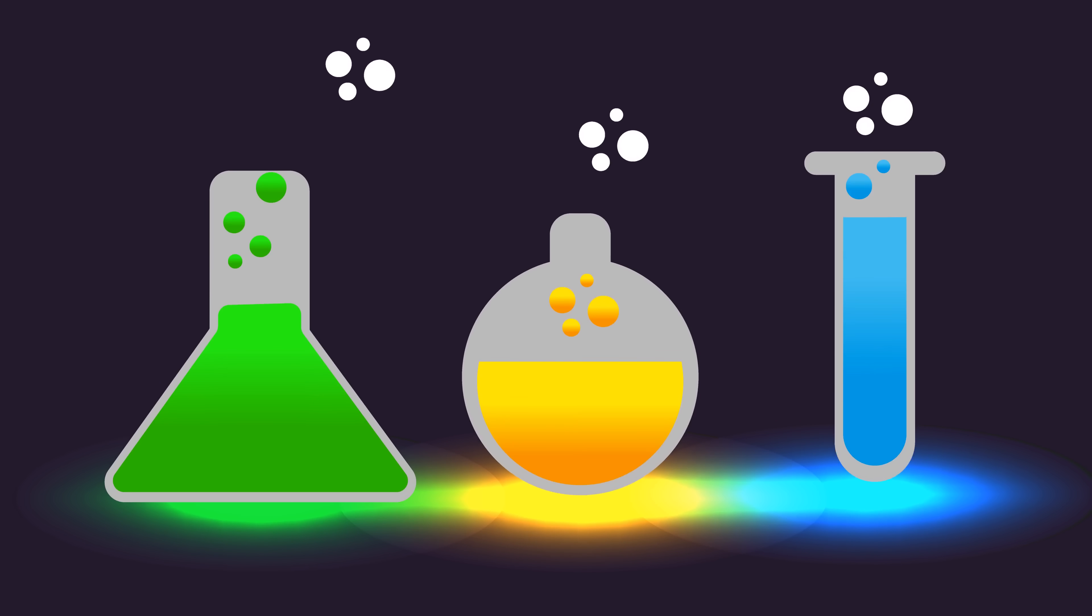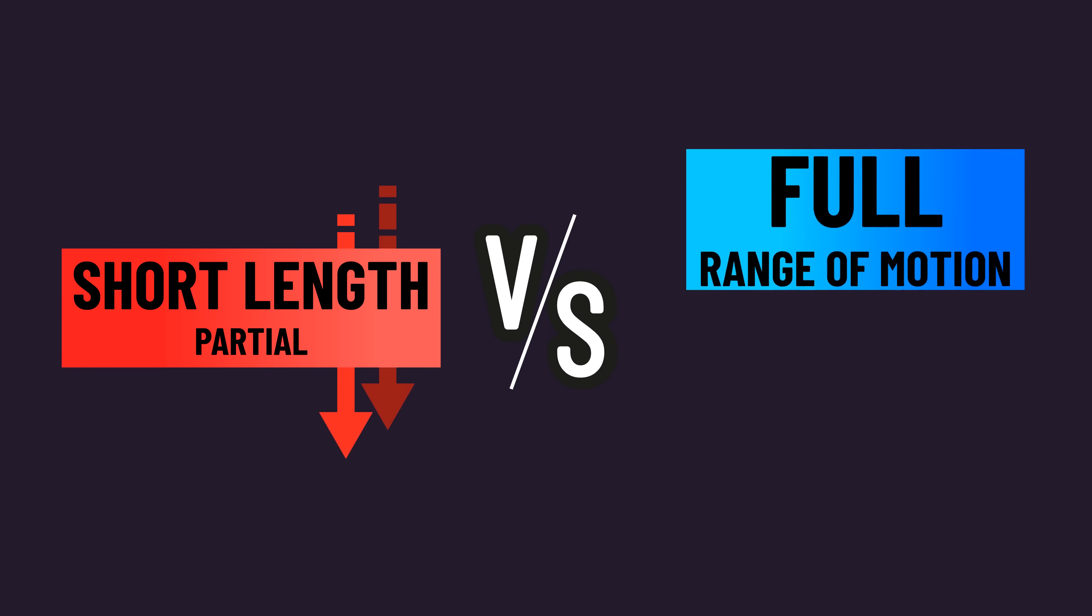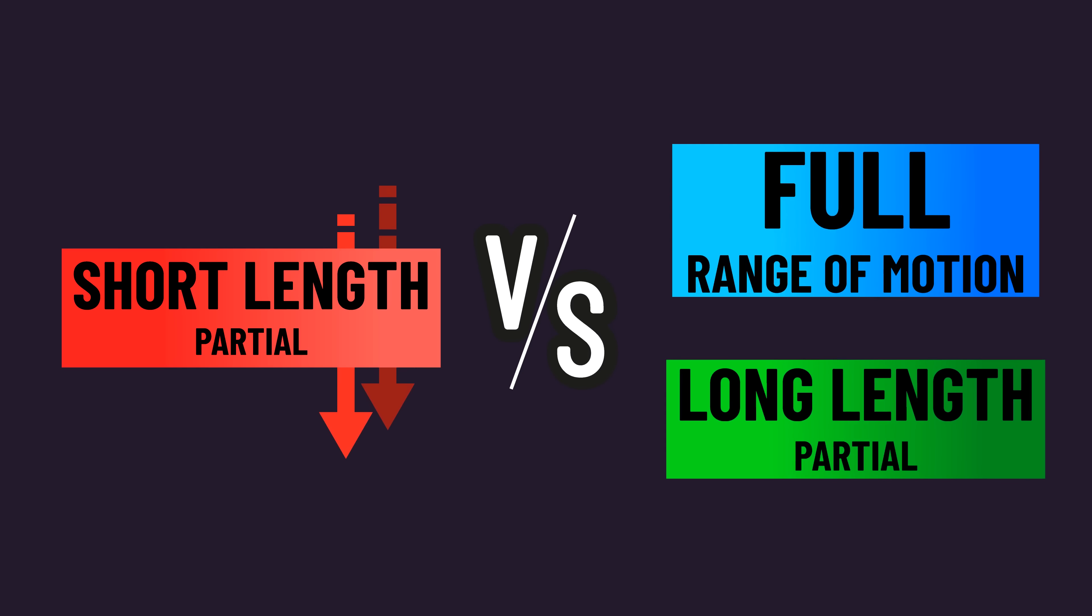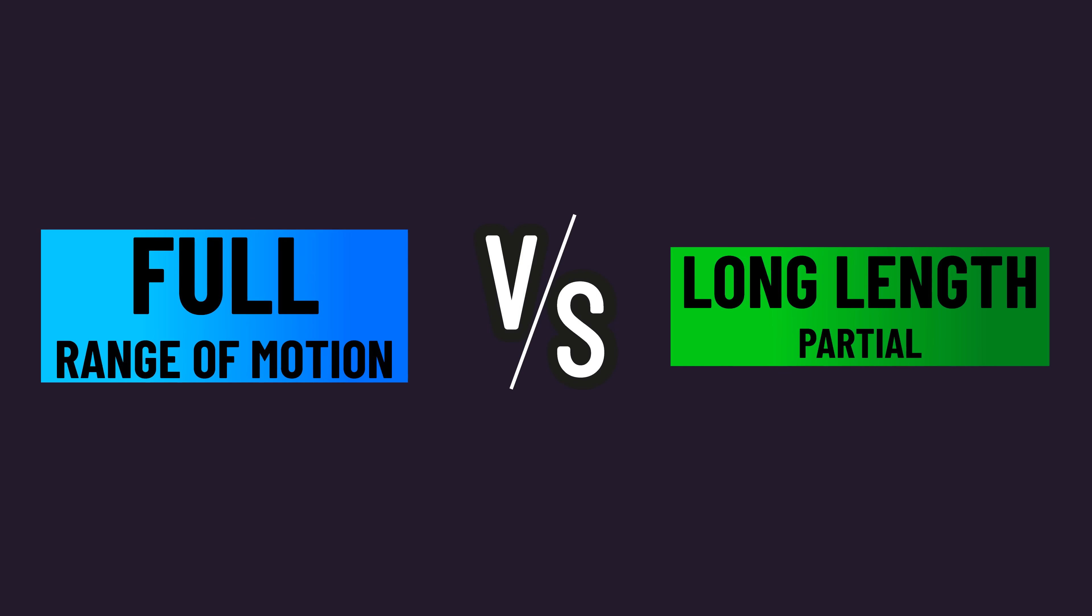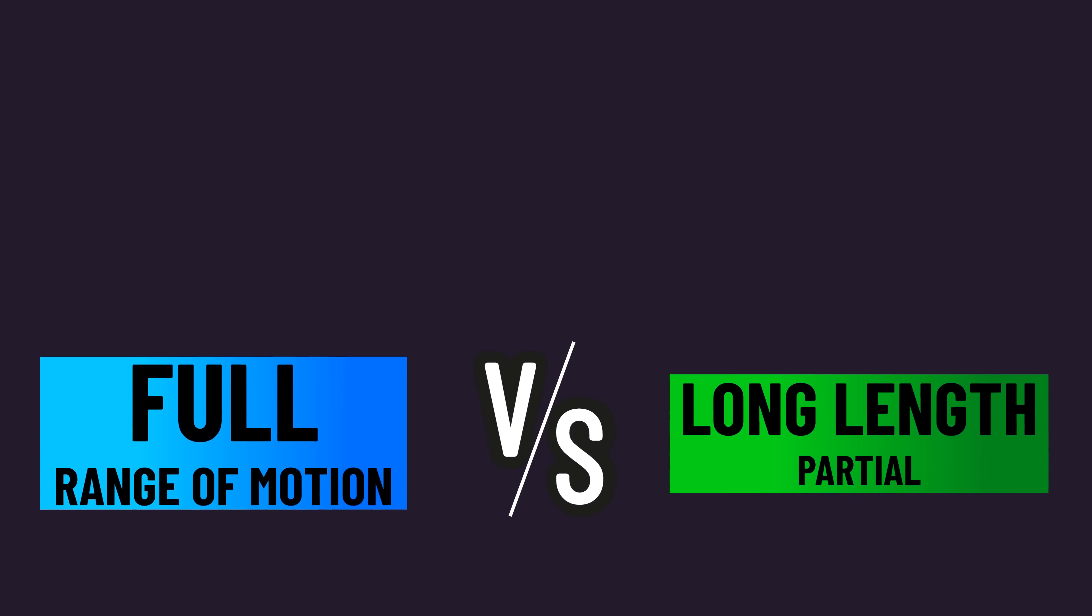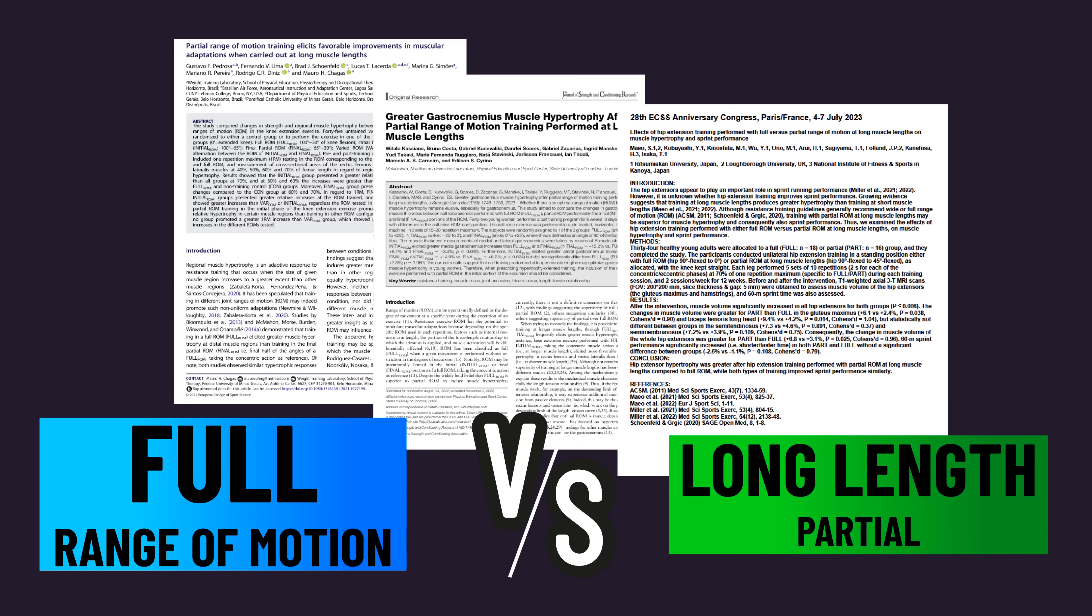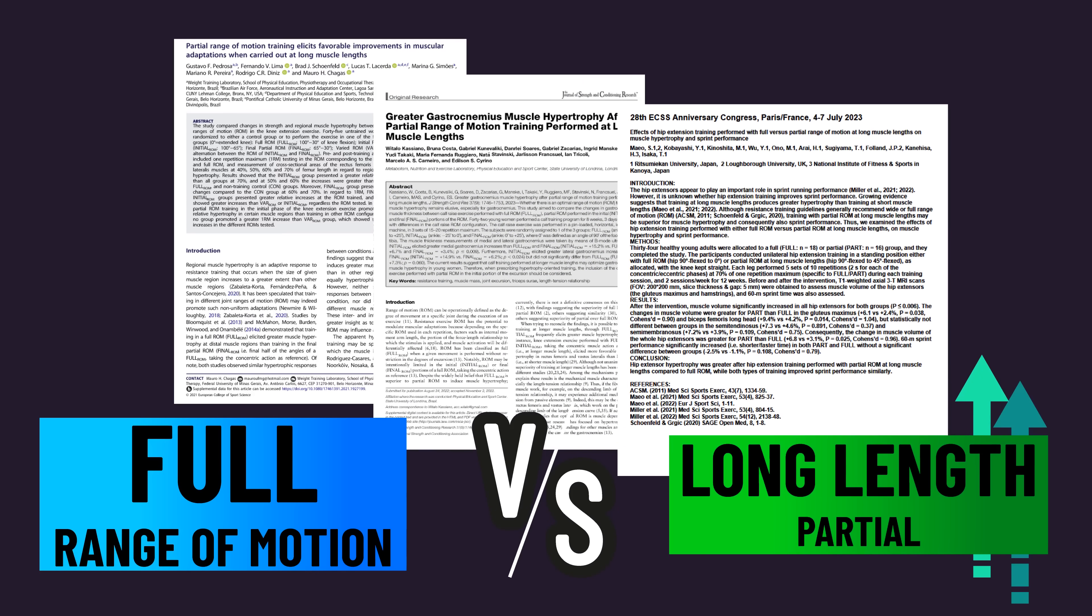Well, the scientific literature tends to find that partials at short lengths aren't as effective as a full range of motion or partials at long lengths. And when comparing a full range of motion to partials at long lengths, we fascinatingly have three studies suggesting partials at long lengths built more overall muscle.